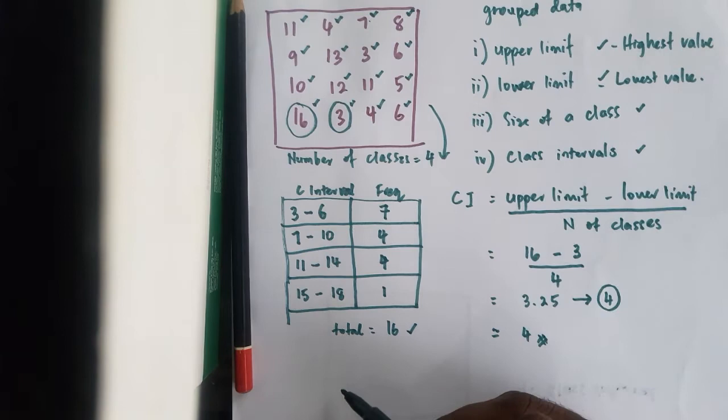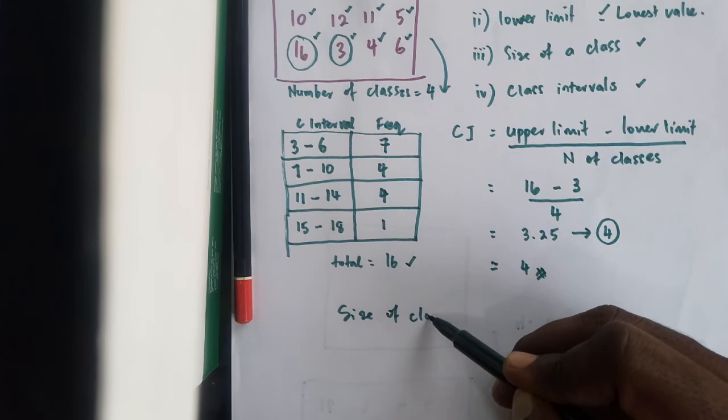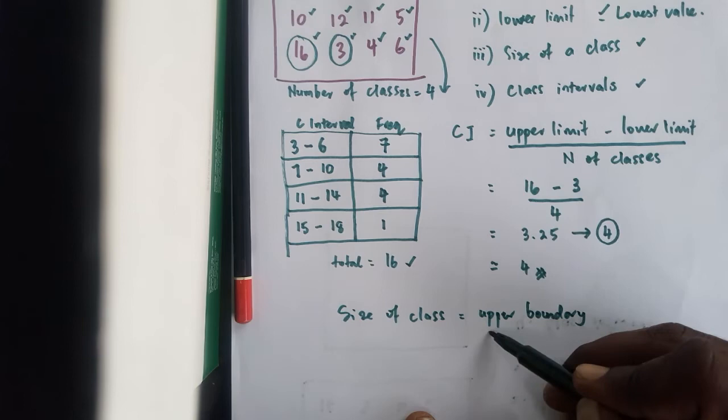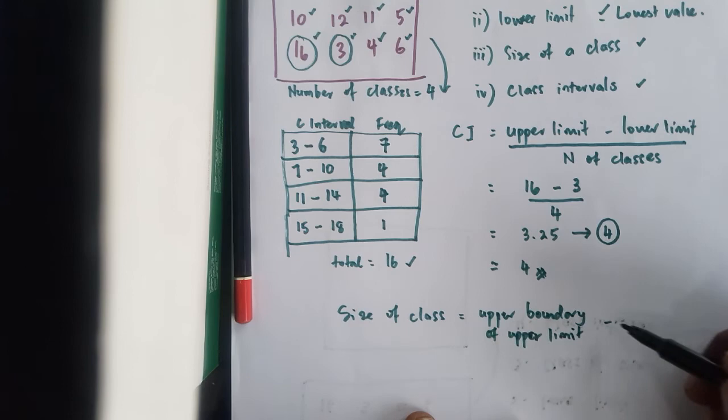Size of class can be obtained by the upper boundary of upper limit minus upper boundary of lower limit.